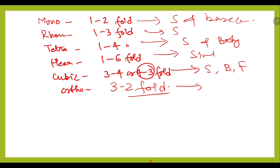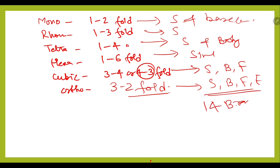Orthorhombic has 4 kinds of Bravais Lattices: simple, body, face, and base-centered. So these are the 14 Bravais Lattices.